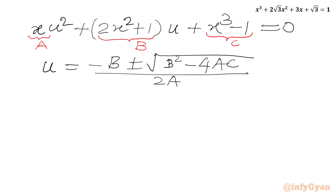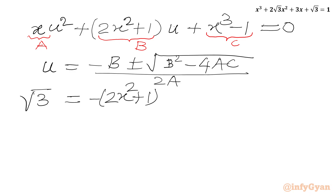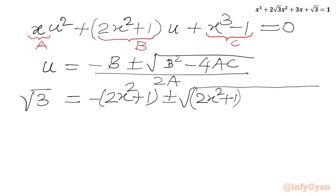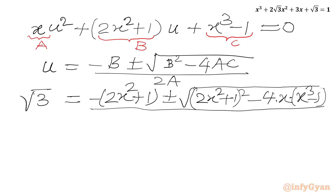Let us apply all the values. On the left-hand side, u = √3. On the right-hand side: −b is −(2x² + 1), plus or minus √[(2x² + 1)² − 4·x·(x³ − 1)], all over 2x.